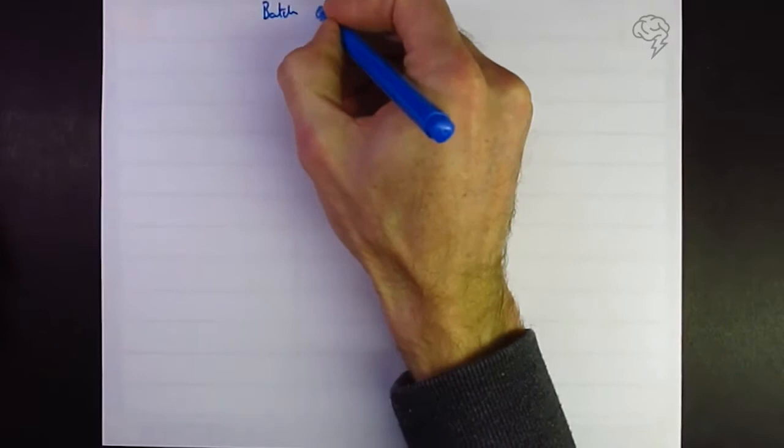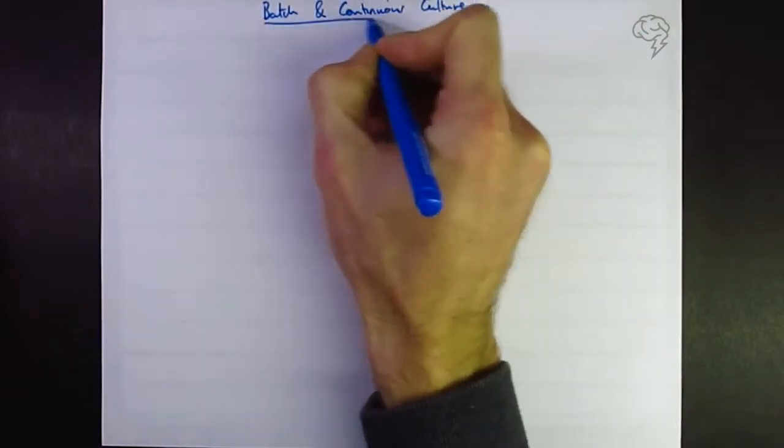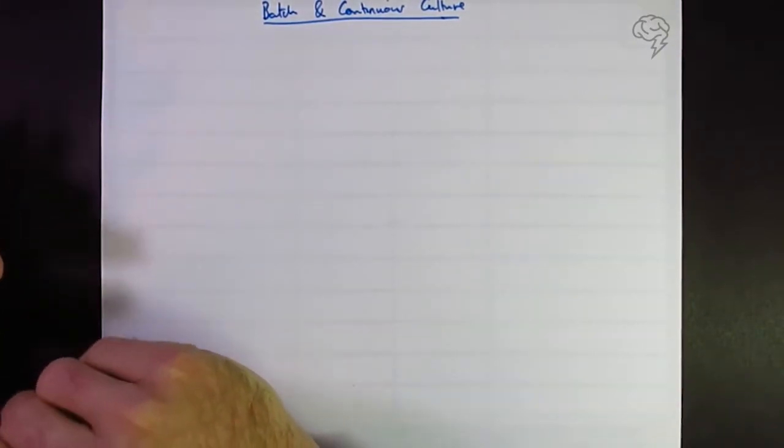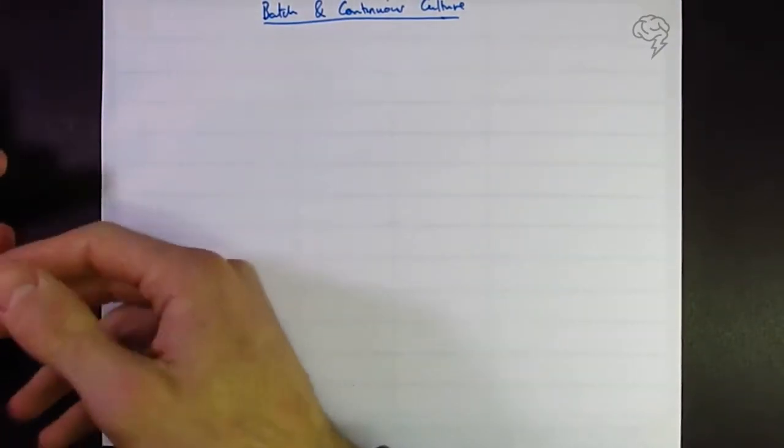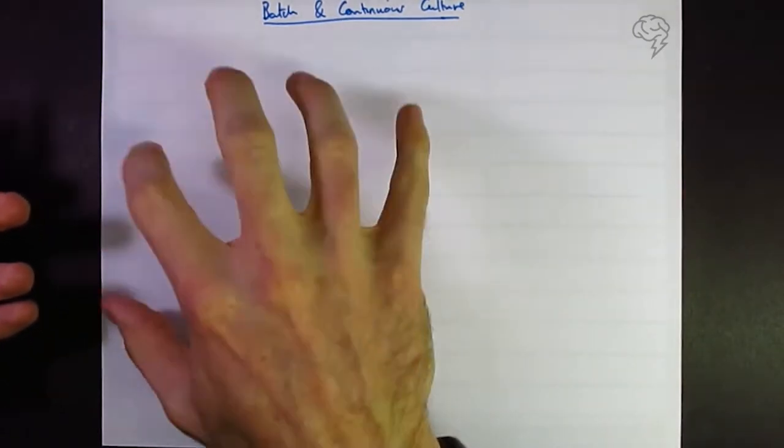Batch and continuous culture. Okay, so when we're working with microorganisms in biotechnology, we're going to produce our product in one of two ways: either batch culture or continuous culture. We're going to look at those here. Most of this is going to be on batch because these are the ones they tend to ask the details on, continuous culture coming at the end.